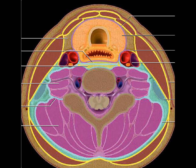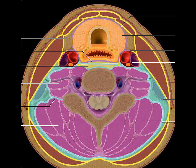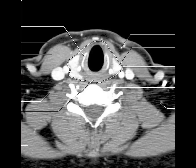In the suprahyoid region, only two spaces are exclusively present in the infrahyoid space and do not extend into the suprahyoid: the visceral space and the posterior cervical space. This is how the infrahyoid spaces are divided.